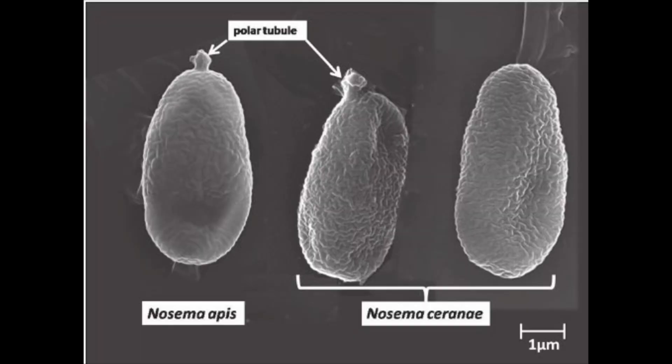Nosema apis and Nosema ceranae are parasitic microsporidian organisms that can cause Nosema disease and dysentery in honeybees. The group Microsporidia is unicellular and spore-forming in nature. They are not visible with the naked eye; microscopic examination is necessary.